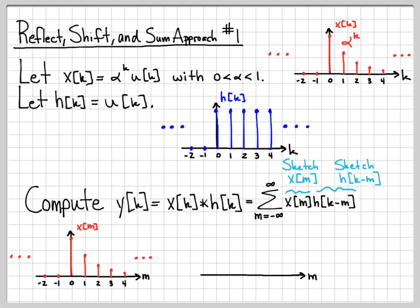h[k-m] is a little trickier. h[k-m], that is a time reversed and shifted copy of the original signal. So when I time reverse it, I get a unit step that is on for all negative time. And when I shift it, that shifts the place that it turns off to time k. So originally, I had a signal h[k] that was off and then turned on at 0.